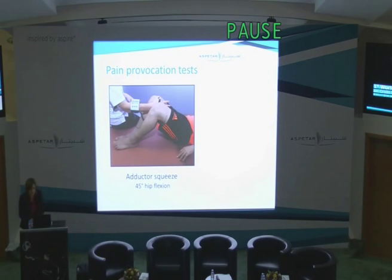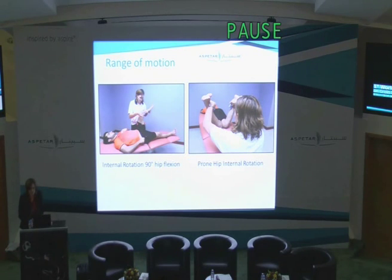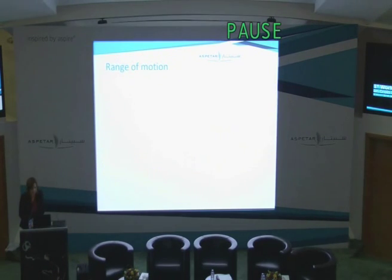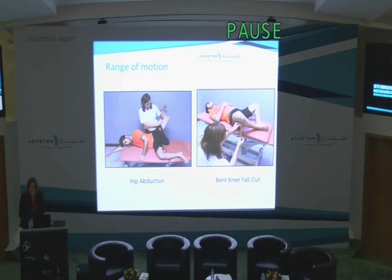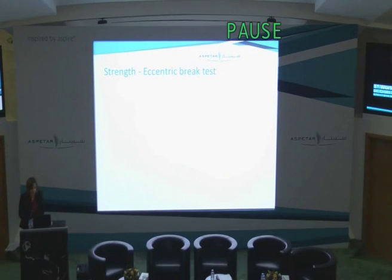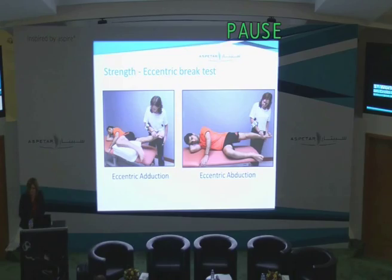The pain provocation tests we chose — we had four pain provocation tests, but today I will only give you the data for the adductor squeeze because we have a quantitative score for it. For each pain provocation test, we collected a rating out of 10 for pain using a numeric rating score. We used two measures for internal rotation range of motion: one in 90 degrees flexion and one in prone or neutral flexion-extension. For hip abduction, we used a new sideline test with a digital inclinometer and also the bent knee fallout test. For strength, we chose an eccentric break test in sideline to fit with the methods used by Tim Tyler in his prospective study of ice hockey players, and we used a handheld dynamometer to measure the score for abduction and adduction.